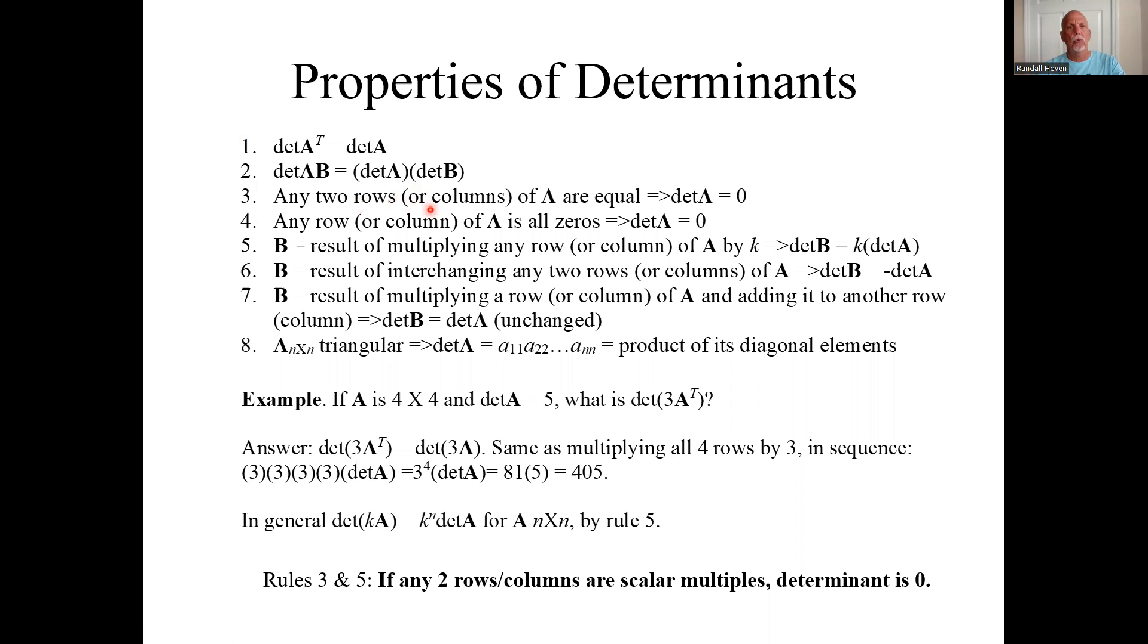If any two rows or columns, actually almost anything I say about a row would apply to columns because of this first property. But if any two rows are equal, then the determinant is zero. If any row or column is all zeros, the determinant is also zero.